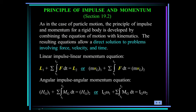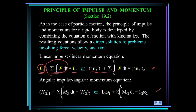The principle of impulse and momentum gives us two equations. The linear momentum at state one plus the sum of all the forces acting on the body integrated over time equals the linear momentum at state two — this is called the linear impulse, where linear impulse is mass times the velocity of the mass center. The second equation states that angular momentum at state one plus the summation of all moments about the mass center integrated over time equals the angular momentum at state two, where angular momentum is I about G times omega.